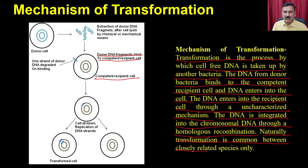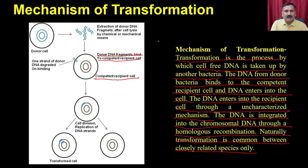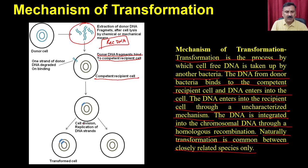Natural transformation is common between closely related species. In the lab, you add excess chromosomal DNA or recombinant DNA to competent recipient cells, and the DNA is taken up. Once taken up, the cell undergoes division and you get transformed cells. Sometimes the DNA has integration sites and integrates into the genome; otherwise it remains as extrachromosomal DNA in the form of plasmids.